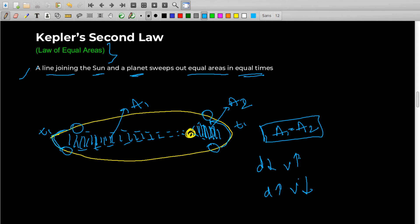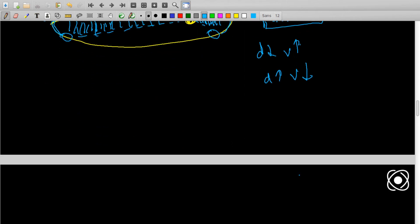Planet moves slower when it is farther away from the Sun. Basically, if the distance of the Sun and planet decreases, the velocity increases. And if distance increases, velocity decreases. That is the essence of this law.